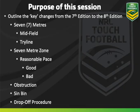Let's have a look at the screen. We're going to talk about the seven meters both in midfield and try line, the seven meter zone, and what's reasonable pace. We're going to show some clips of what's good reasonable pace and what's bad reasonable pace. We're also going to talk about the new obstruction interpretation, the sin bin, and drop-off procedures.